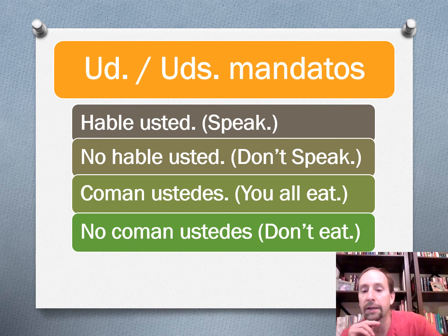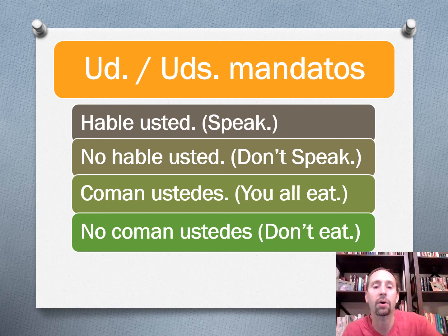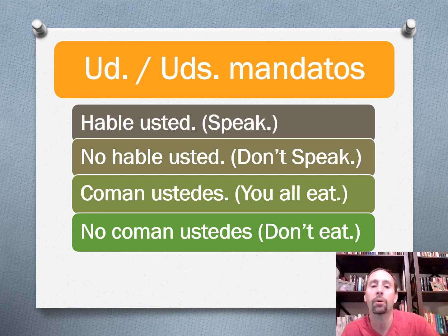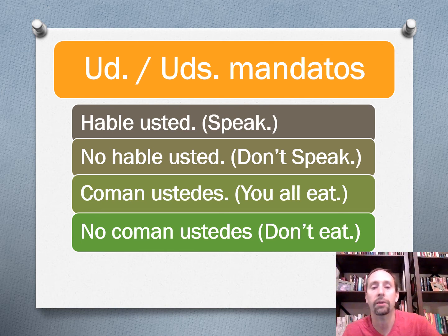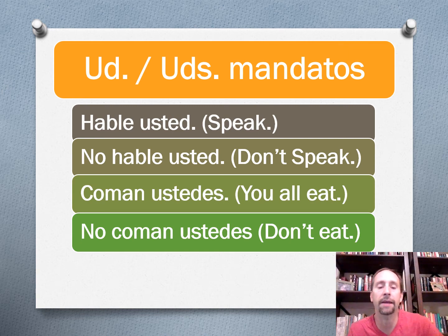Let's take a look at the usted and ustedes commands. So I'm going to have the opposite endings for these. Normally hablar is going to be hable for the usted form, or no hable — speak or don't speak. And same thing for ustedes, just with the opposite ending. So for comer: coman ustedes, or no coman ustedes. Whether it is affirmative or negative, it's the same form.